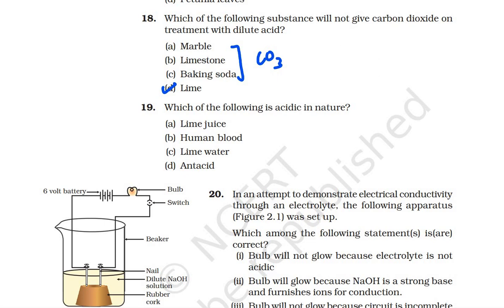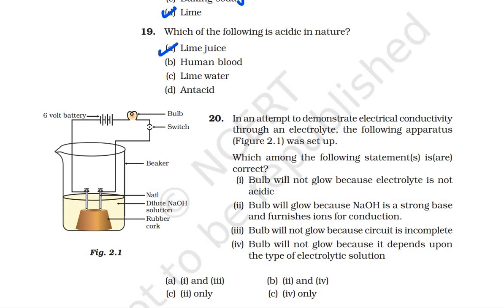Question 19: which of the following is acidic in nature? The answer is lime juice — lime juice is acidic. Human blood is neutral, and lime water, while it seems acidic, is actually somewhat basic. Antacid is also mentioned in question 20.